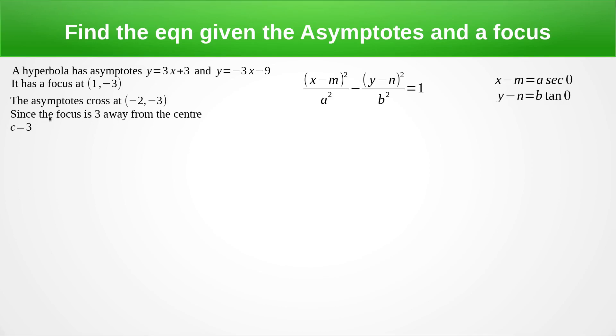And obviously, you can see here the focus is 3 away because the distance between 1 and minus 2 is 3. So we've got the c value. We've got the centre. So we know that m equals minus 2 and n equals minus 3.